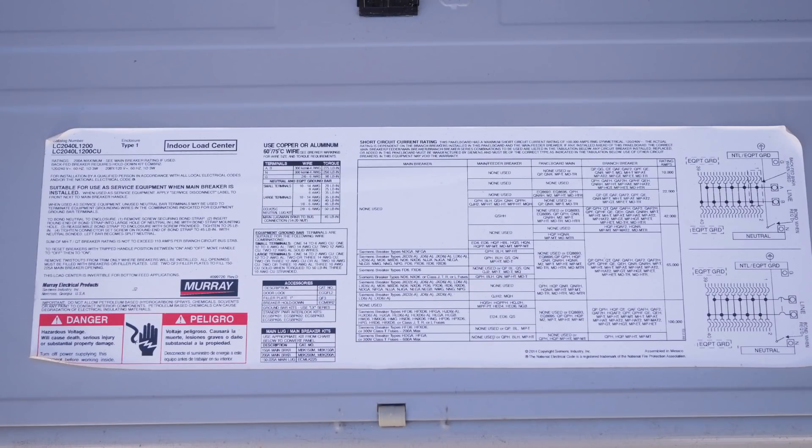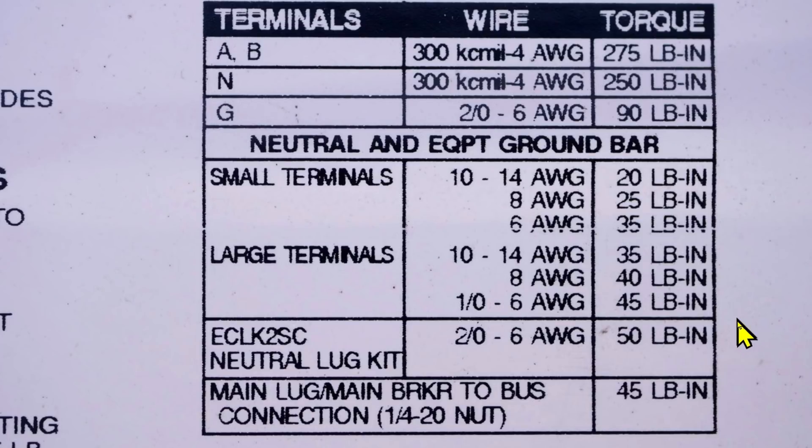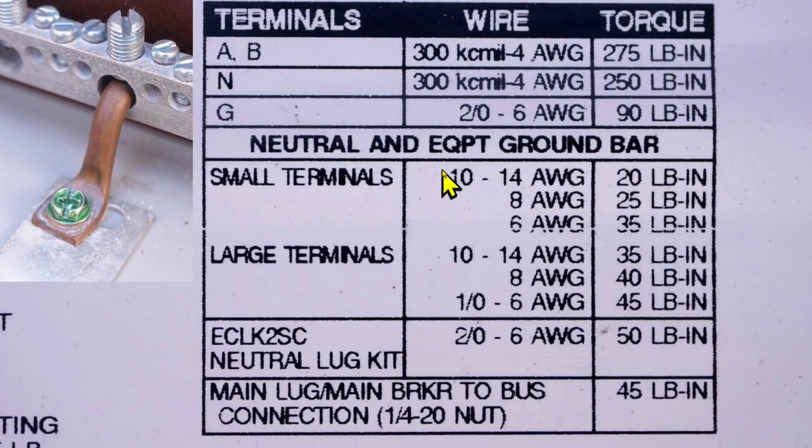The next thing I'll do is check this sticker that is found on the inside of the panel door. On that sticker there's a chart. Here we have neutral and equipment ground bar. We just put that piece of copper into the neutral ground bar.